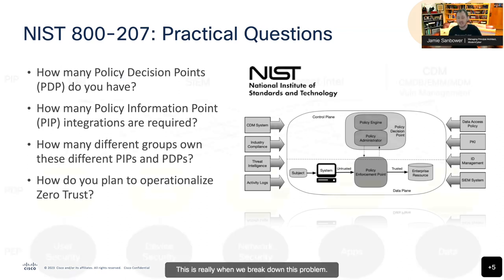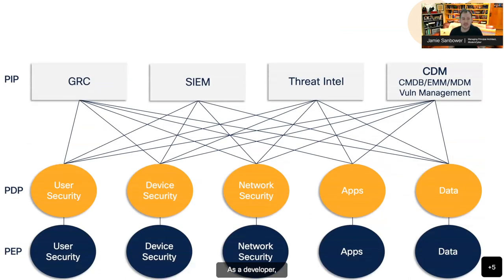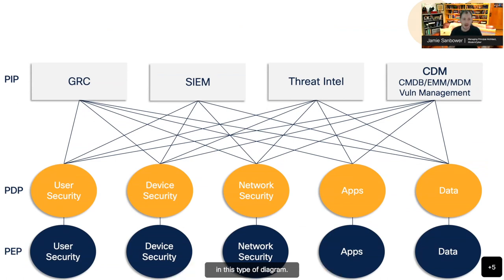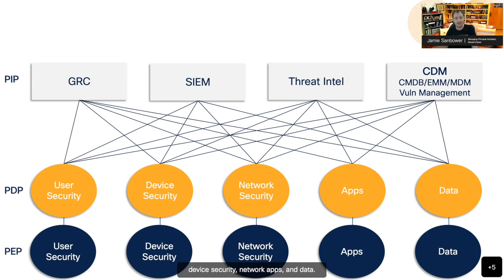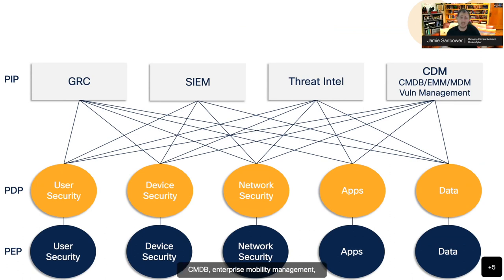As a developer, you hopefully start thinking about it this way: if we take NIST 800-207 and break out the different policy decision point areas around user security, device security, network, apps, and data — we have all of these individual integrations. This is a simplified view, because CMDB, enterprise mobility management, mobile device management, and patch management are typically all different systems you have to integrate into. For many customers, this becomes overwhelming extremely quickly. So a lot of times we've worked with customers to help prioritize their Zero Trust strategy and roadmap.